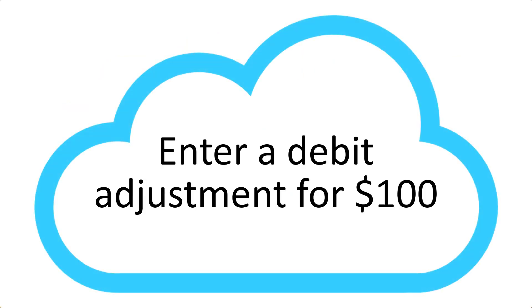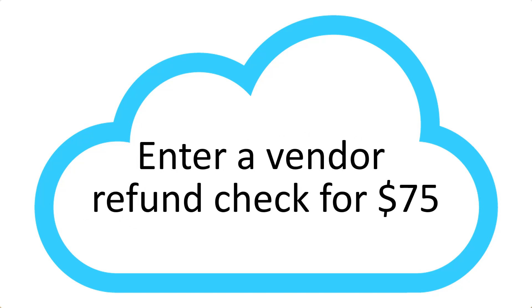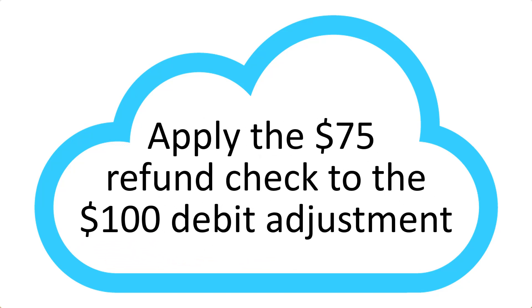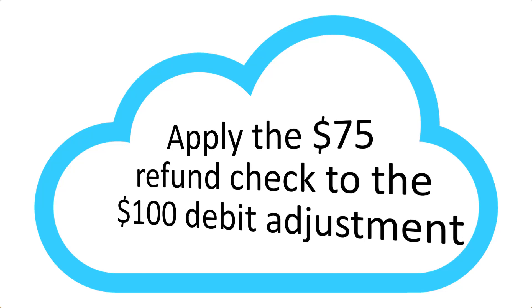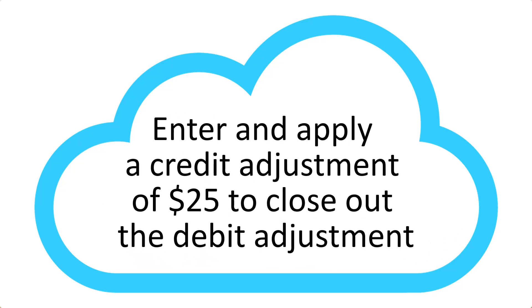Hello, I am going to demonstrate. Number one, I'm going to enter a debit adjustment for $100. Number two, I will enter a vendor refund check for $75. Number three, I will apply the $75 refund check to the $100 debit adjustment. Number four, I will enter and apply a credit adjustment of $25 to close out the debit adjustment.